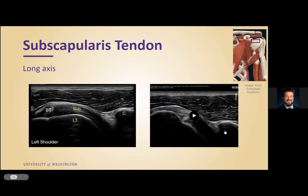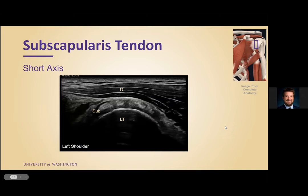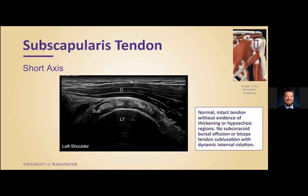We also did dynamic testing at this point to make sure there was no subluxation of the biceps tendon in the bicipital groove, and also making sure there was no impingement or subcoracoid effusion with dynamic testing. We then looked at the subscapularis in short axis. This is the normal appearance of the subscap — it is a multi-pennate muscle, so it's normal to have hyperechoic areas with hypoechoic areas in between. Moving on with our report, we have a normal intact tendon without evidence of thickening or abnormal hypoechoic regions, no subcoracoid bursal effusion, or biceps tendon subluxation with dynamic internal rotation.